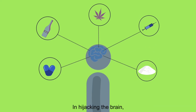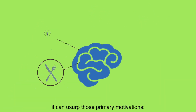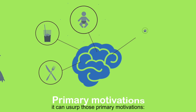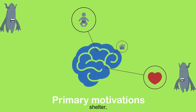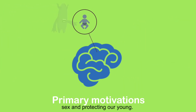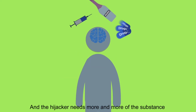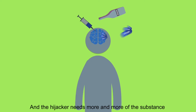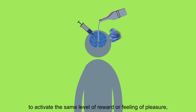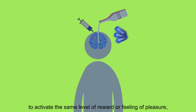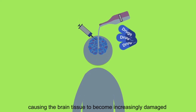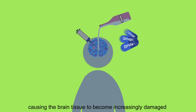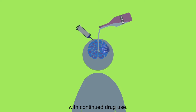In hijacking the brain, it can usurp those primary motivations — food, water, shelter, sex, and protecting our young. And the hijacker needs more and more of the substance to activate the same level of reward or feeling of pleasure, causing the brain tissue to become increasingly damaged with continued drug use.